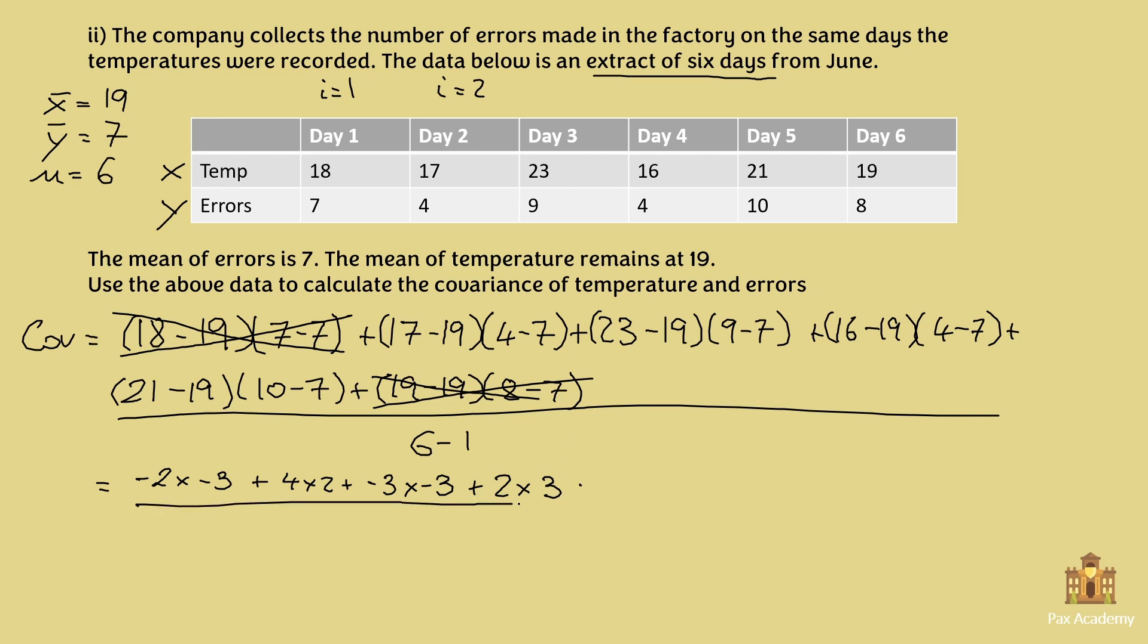So then we have this whole thing over 6 minus 1, which is 5. Again, we further simplify. Minus 2 times minus 3 is 6, plus 8, plus 9, plus 6, over 5.